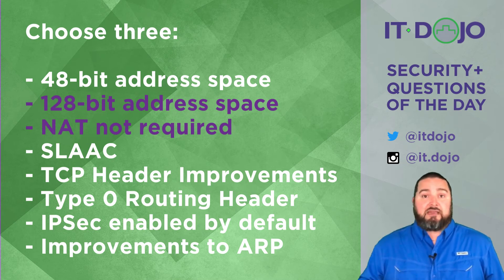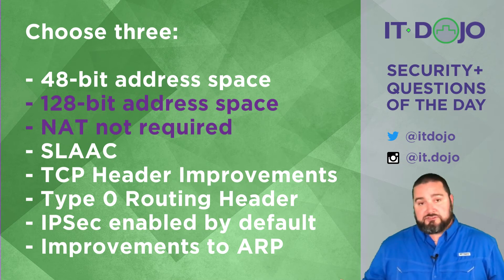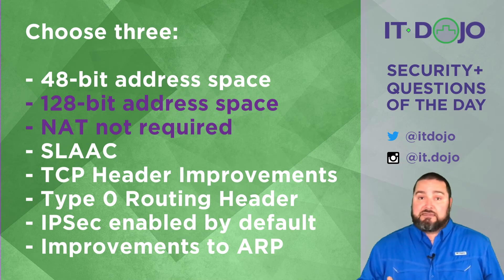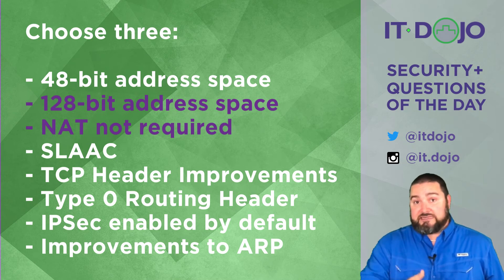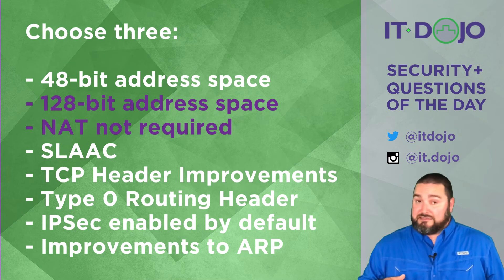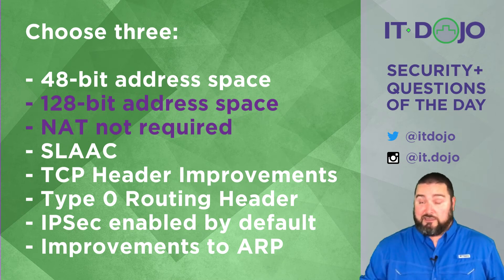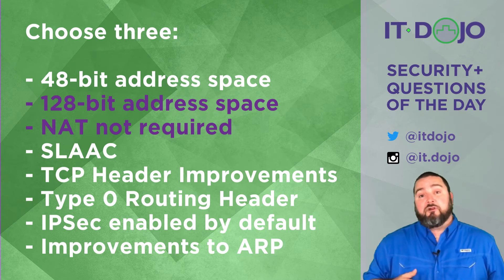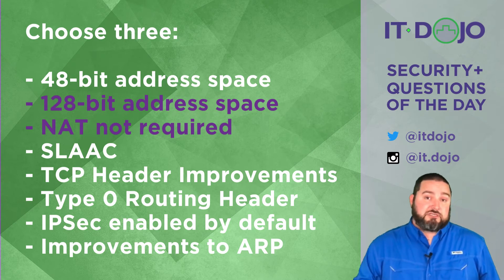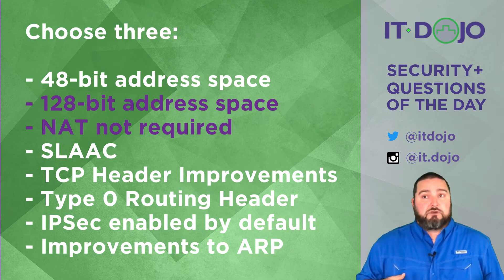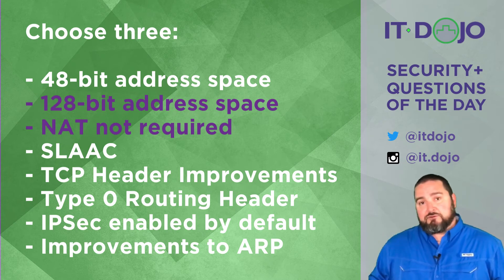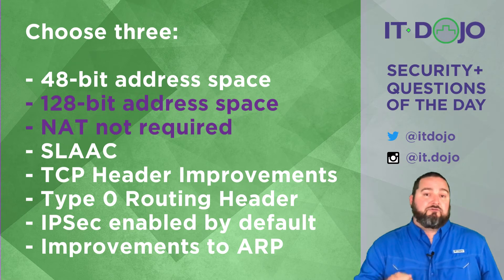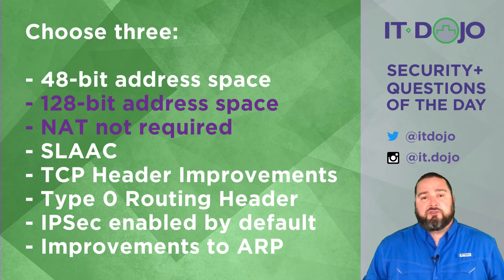NAT66 — NATing from an IPv6 network to an IPv6 network — is the one that technically doesn't need to exist; by standard it does not exist. That's not to say that there aren't NAT66 implementations out there. There are other kinds of NAT, most notably NATing from IPv4 networks to IPv6 networks or vice versa. NAT still exists in IPv6, but not the NAT we've all known and loved and/or hated for all these past years.